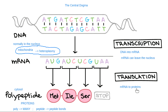mRNA is just instructions — there's no DNA in it. DNA and RNA are two different things. When you think about mRNA, always consider that mRNA is the specific instructions for the particular protein that you're building.